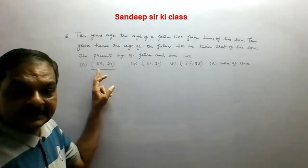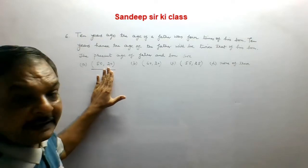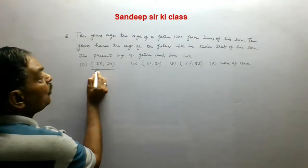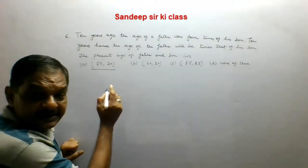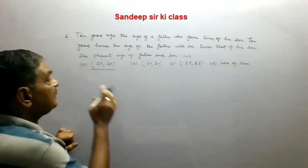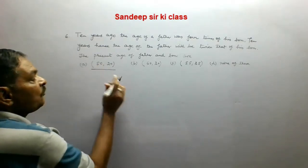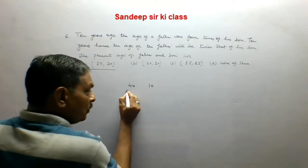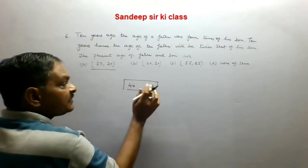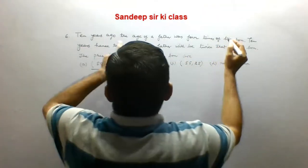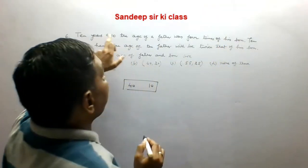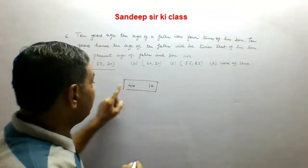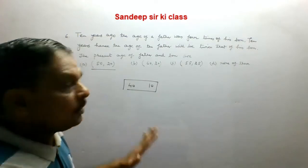We take option A: father's present age is 50 years, son's present age is 20 years. Ten years before, the father's age was 40 and that of the son was 10. It is true that 40 is four times 10, so the first condition is correct.